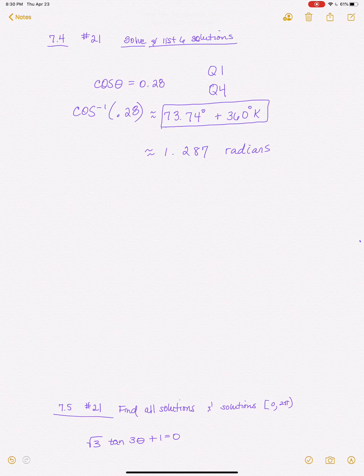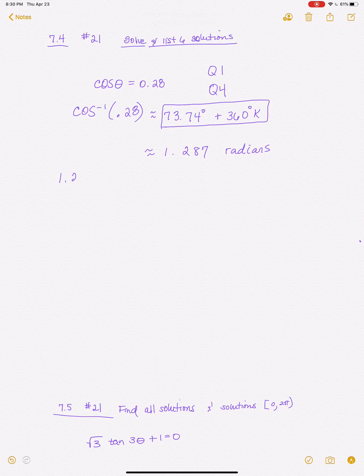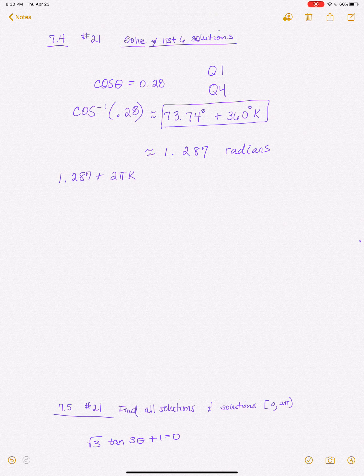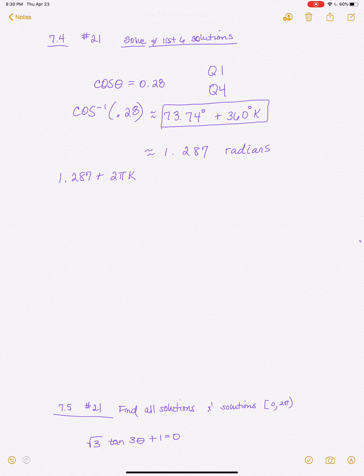So if I was going to write all solutions for that, let's just go ahead and do that. So that's going to be 1.287 plus 2 pi radians. And I'm going to use the integer K or N or whatever integer they ask you to use. So K would be any integer at that point. So that's my angle out of the first quadrant.